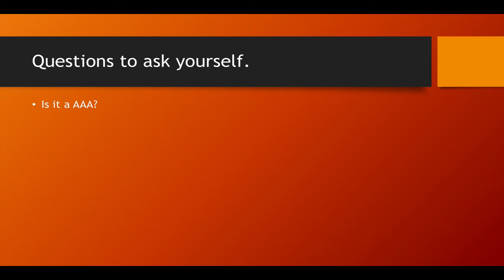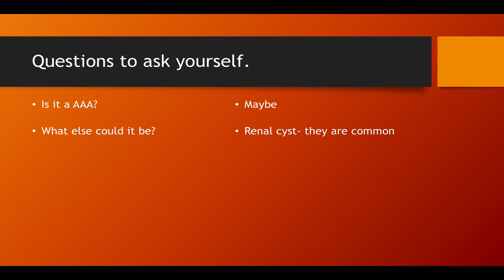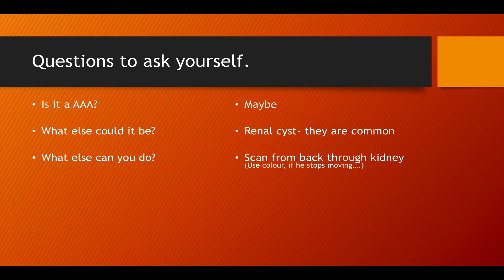Is it a AAA? Is there anything else that can cause this sort of black hole in the abdomen? There is. Renal cysts are quite common. Very large distended gallbladders may look like this. And don't forget you don't have to scan from the front or even from the side — you can scan through the back, through the kidney, particularly if the patient's lying on the side. A lot of the time we talk about putting on color Doppler to show flow, but it can be quite hard when the patient is very mobile.